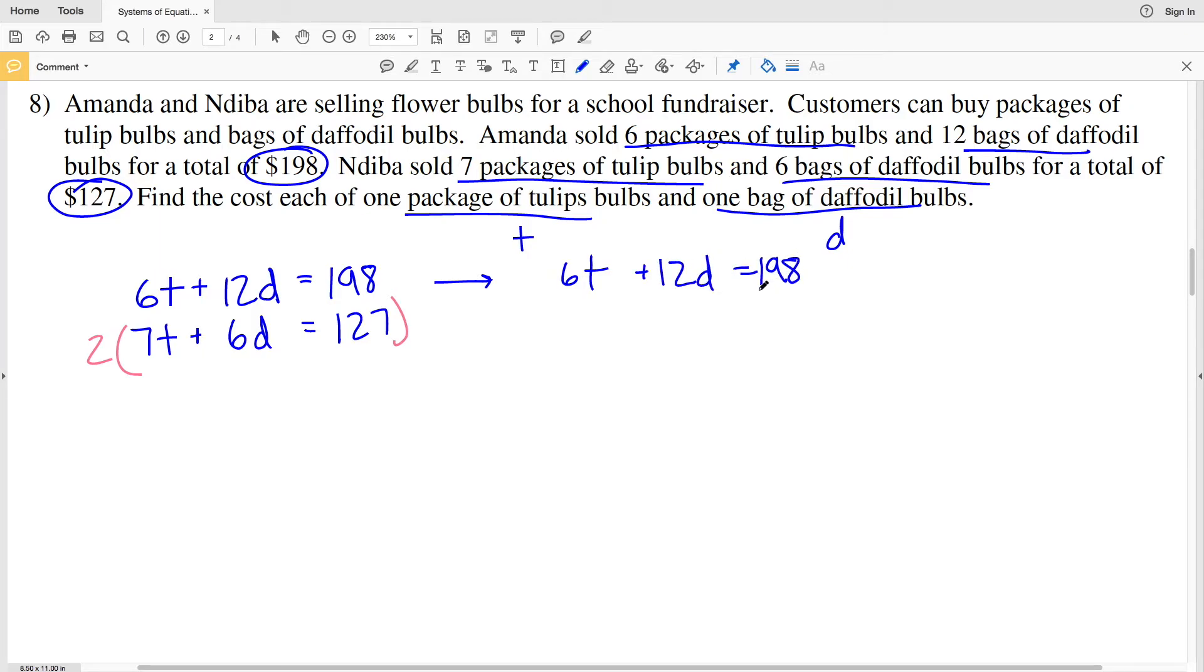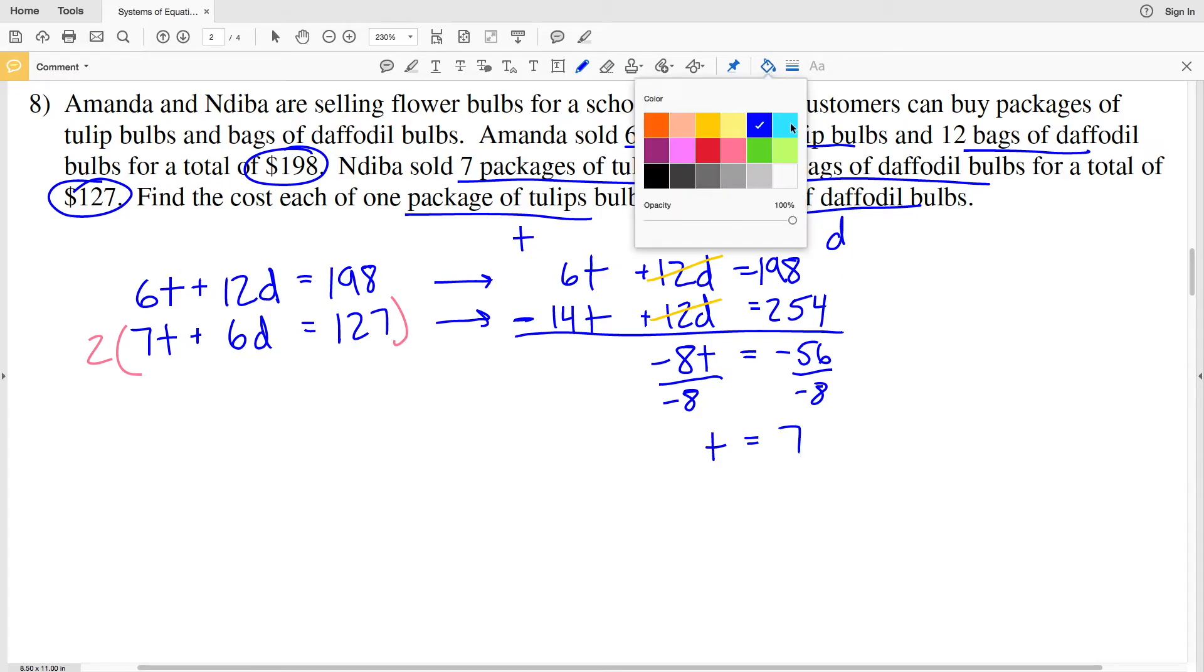So that will give me 6T plus 12D equal to 198. That's me rewriting that first equation. And then multiplying by 2, I'll have 14T plus 12D equal to 127 times 2, which is 254. And remember, when I multiply an entire equation by 2, I'm multiplying the left-hand side and the right-hand side. And now I'll subtract in order to cancel out my terms with D, because 12D minus 12D is 0. So 6T minus 14T will be negative 8T, and that's going to be equal to 198 minus 254, which is negative 56. So by dividing both sides by a negative 8, I'll get that T, the cost of a package of tulip bulbs, is 7, and that will be $7.